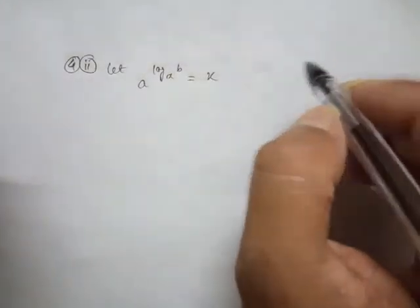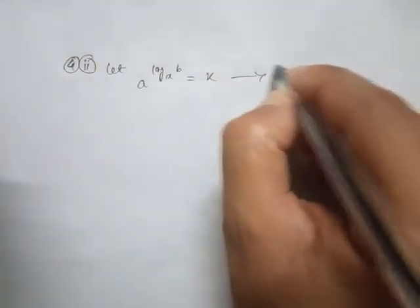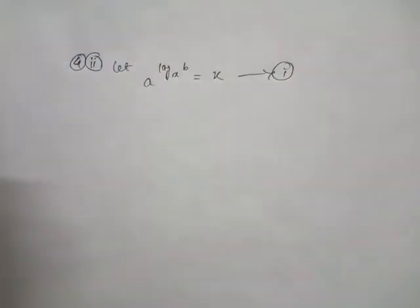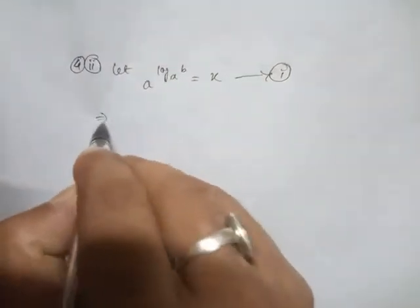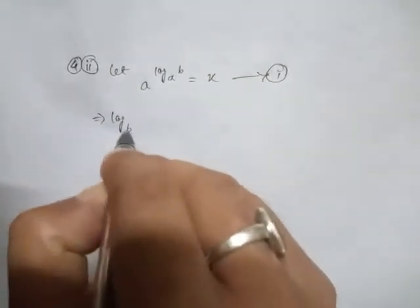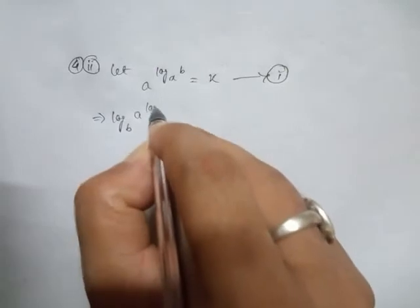Now look, after that if I take log b on both sides then what will happen? Look here, log b if I take both sides then this could be log b and k.